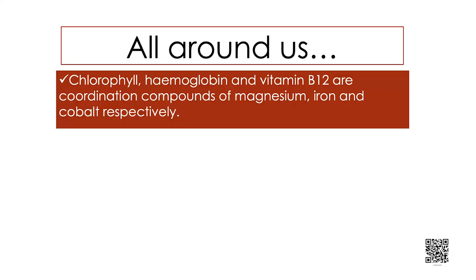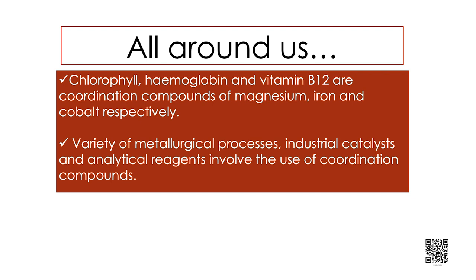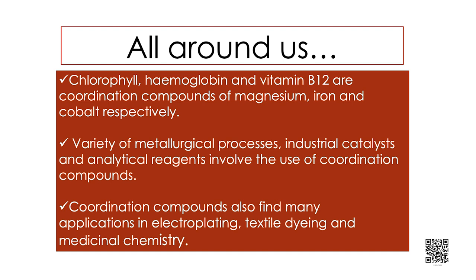Where and how do we use them? You will appreciate their presence in our life systems. Chlorophyll, hemoglobin and vitamin B12 are coordination compounds of magnesium, iron and cobalt respectively. A variety of metallurgical processes, industrial catalysts and analytical reagents involve the use of coordination compounds. Coordination compounds also find many applications in electroplating, textile dyeing and medicinal chemistry.